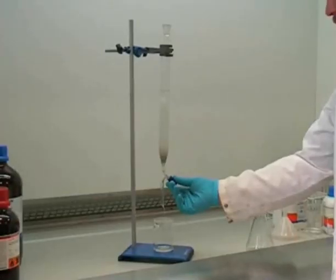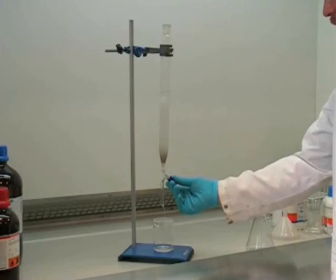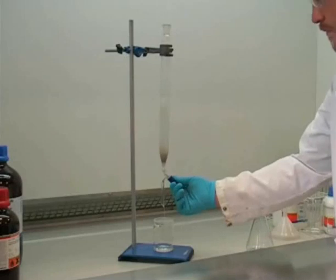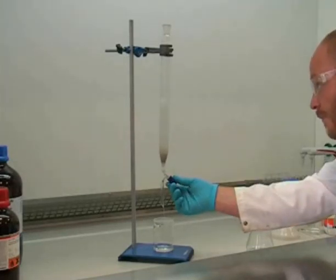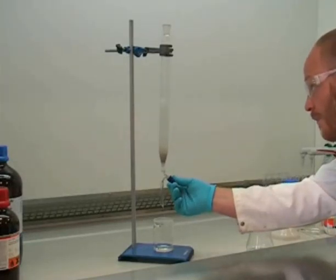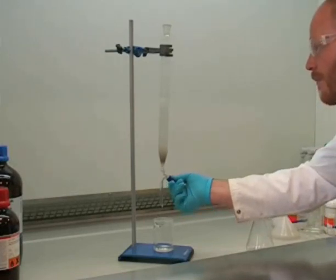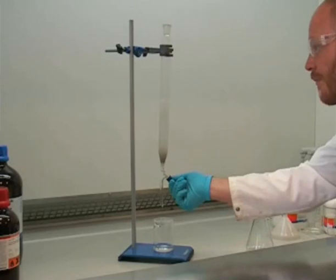It's crucial that you don't allow the silica to run dry, so you need to keep a close eye on the level of the eluent and close the tap at the appropriate moment. Here you can see we've run the eluent down to the correct level so that the top of the silica has not dried out.